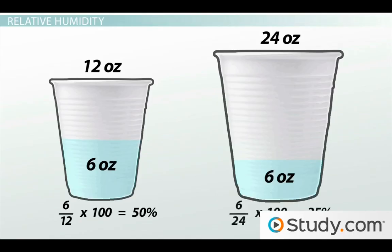So six divided by 24 times 100 equals 25%. If the 12 ounce cup represents cold air and the 24 ounce cup represents warm air,